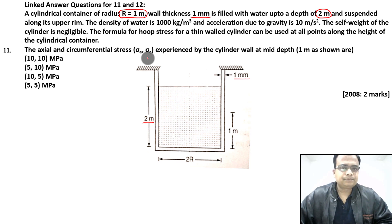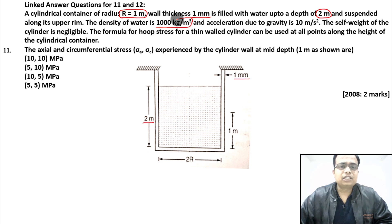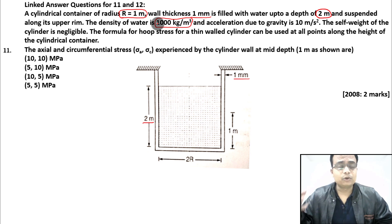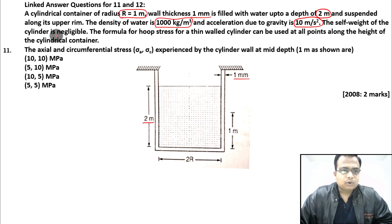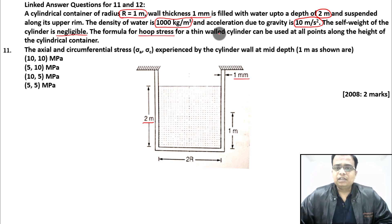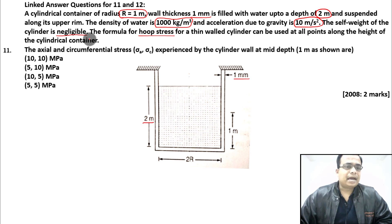The density of water is given as 1000 kg/m³ — that's by default even if not stated. Acceleration due to gravity is given as 10 m/s². The self-weight of the cylinder is negligible. The formula for hoop stress for a thin-wall cylinder can be used at all points along the height of the cylindrical container.